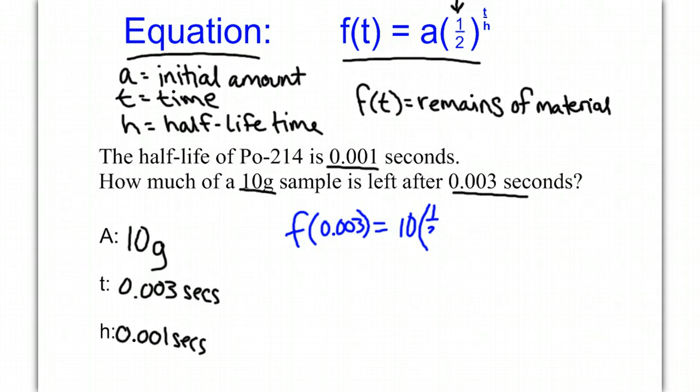0.003 divided by our h, 0.001. Now if we put this into a calculator, we can see that the function,